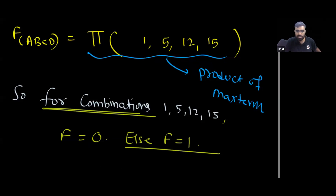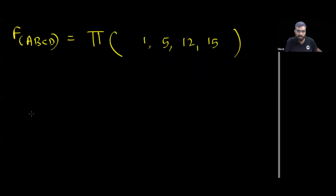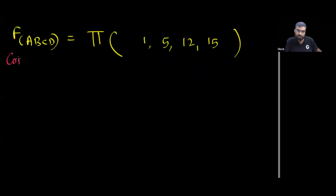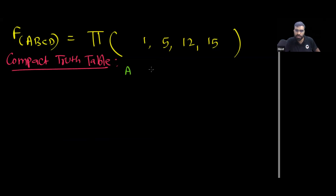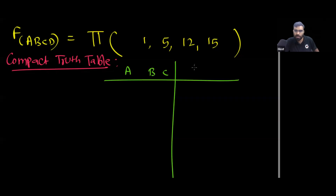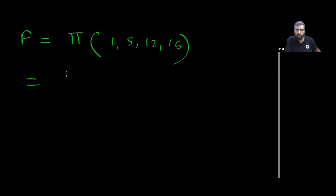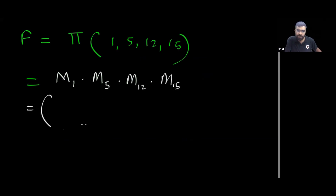You can create a compact truth table with just ABC on the select lines. The function F equals maxterm 1 AND maxterm 5 AND maxterm 12 AND maxterm 15. Let's see: maxterm 1 means the combination 0001, which gives (A OR B OR C OR D̄). Let's evaluate from here.